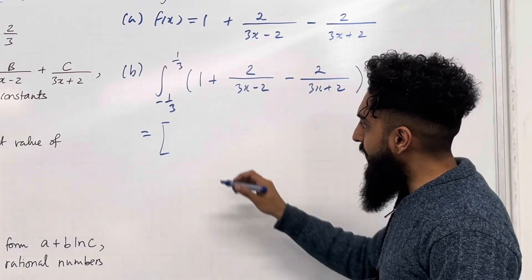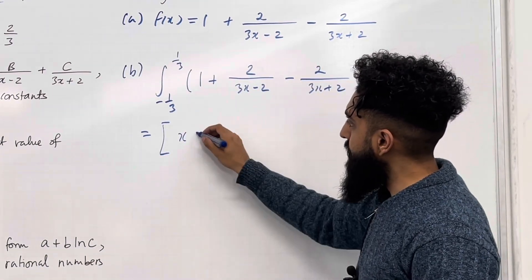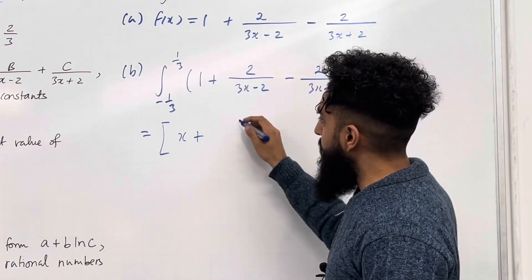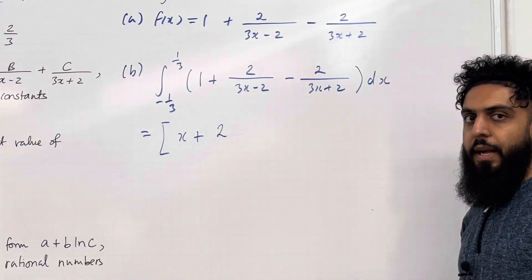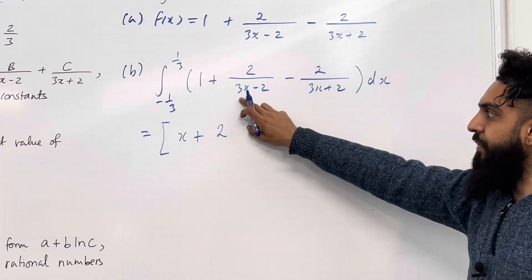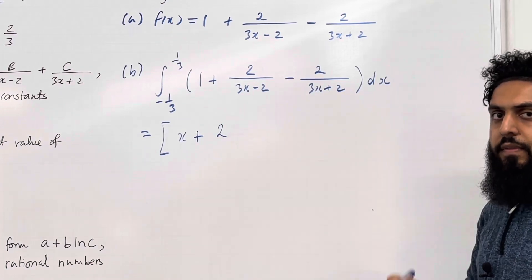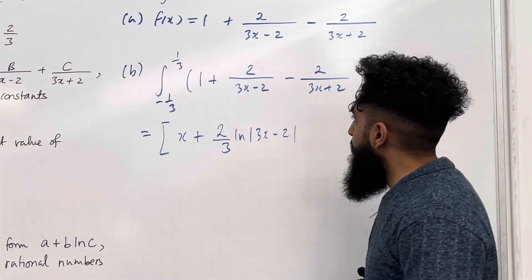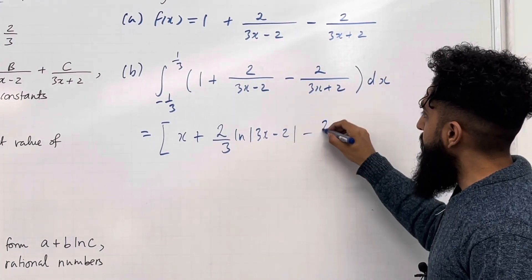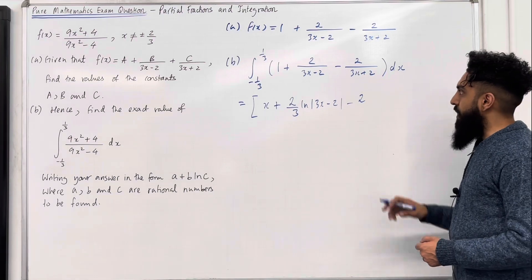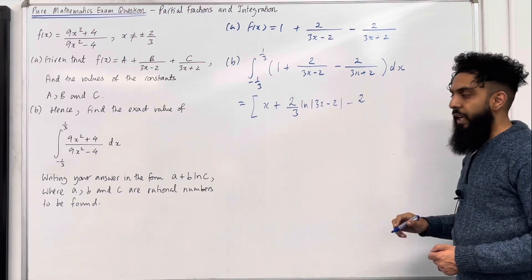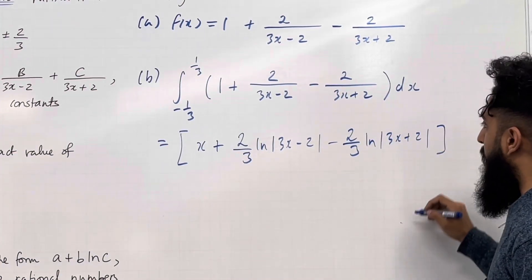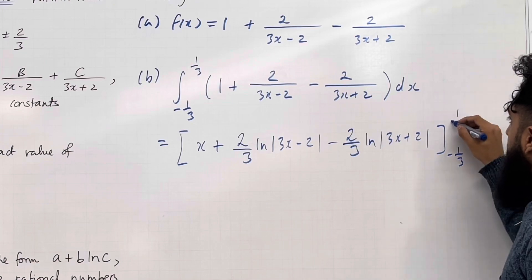Carrying out the integration: the 1 integrates to x. The two fractions integrate to natural logarithms. We take the constant 2 and multiply by 1 over the coefficient of x, which is 3, giving 2 over 3 times ln|3x minus 2|. Similarly, minus 2 over 3 times ln|3x plus 2|. We evaluate this between the lower limit minus 1 over 3 and upper limit 1 over 3.